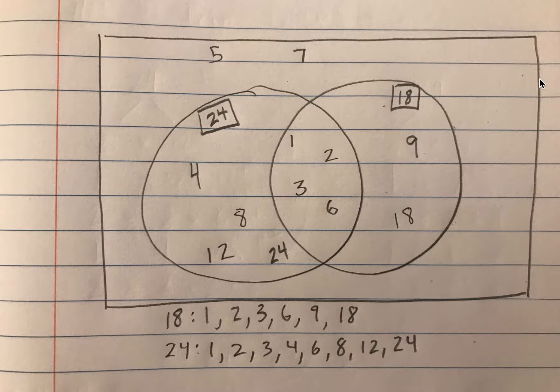We're going to take a look at a couple of Venn diagrams that show factors for two different numbers. So the first Venn diagram shows factors for 18 and factors for 24. At the bottom you can see a list of all the factors for 18.